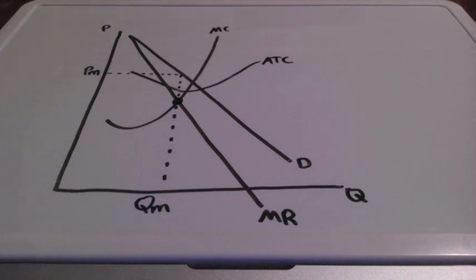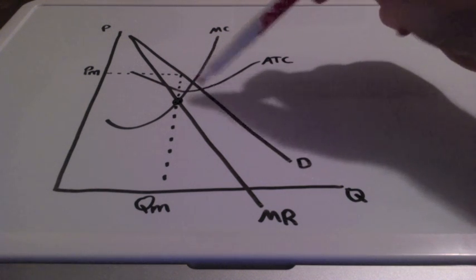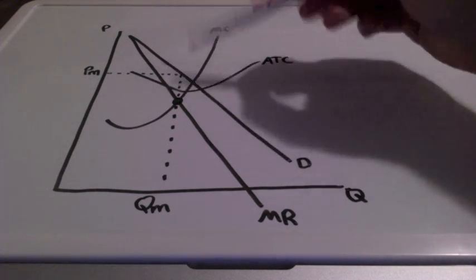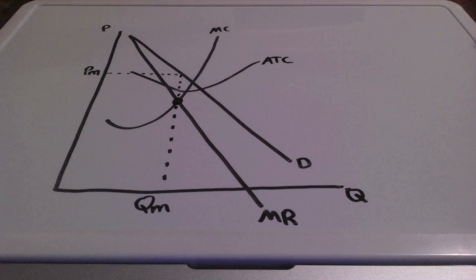Can the government ever get the monopoly to produce at the socially optimal level, which is where demand equals marginal cost, without force, without forcing that they lower their prices and produce a larger quantity?